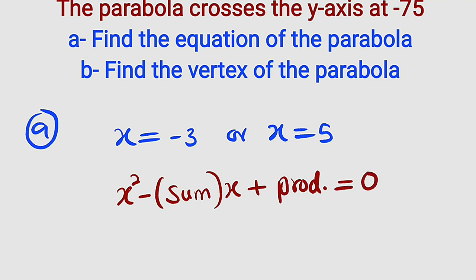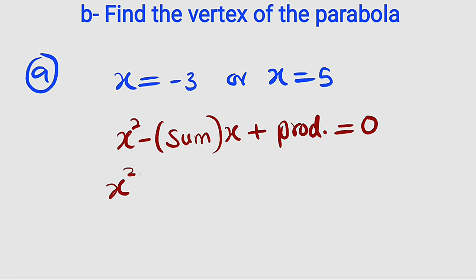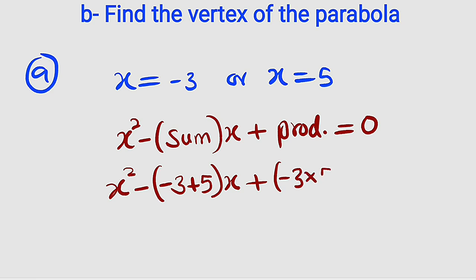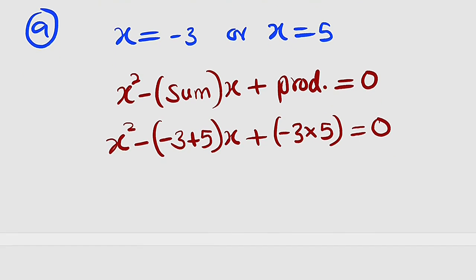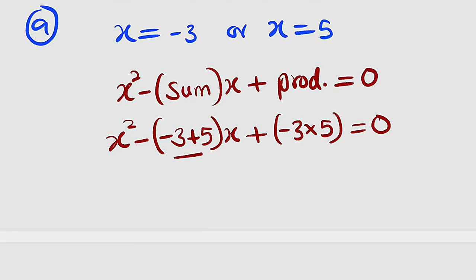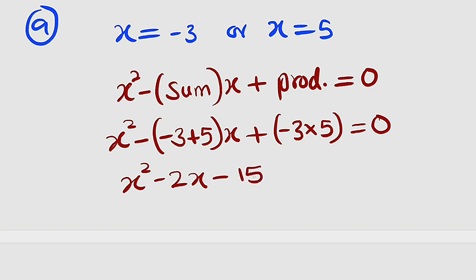Now let's substitute. We have x squared minus the sum — that is negative 3 plus 5 — multiplied by x, plus the product negative 3 times 5, all equal to zero. Simplifying: negative 3 plus 5 is positive 2, so we have x squared minus 2x. Then negative 3 times 5 is negative 15, giving us x squared minus 2x minus 15 equal to zero. This is the quadratic equation that has roots negative 3 and 5.